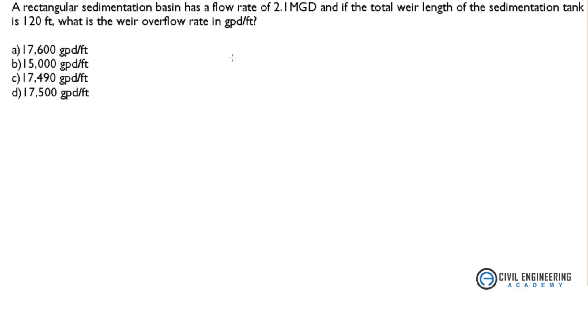A rectangular sedimentation basin has a flow rate of 2.1 million gallons per day and if the total weir length of the sedimentation tank is 120 feet, what is the weir overflow rate in gallons per day per feet? So we have to calculate weir overflow rate.